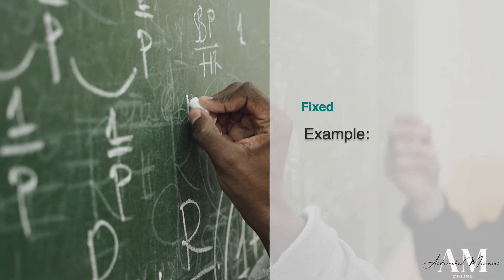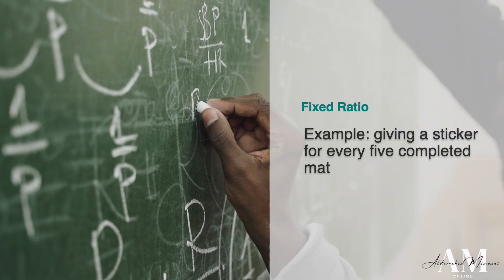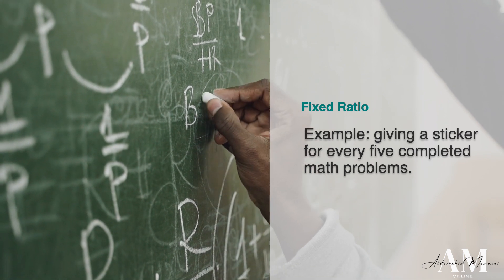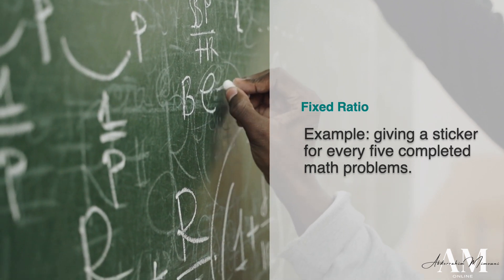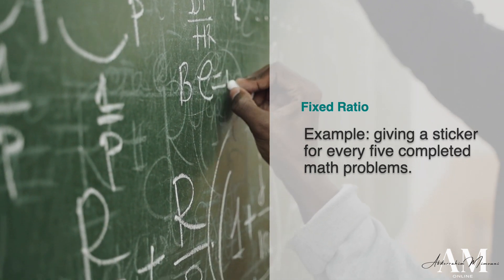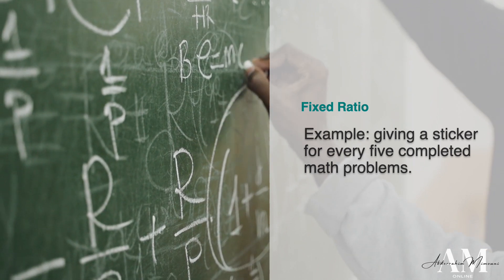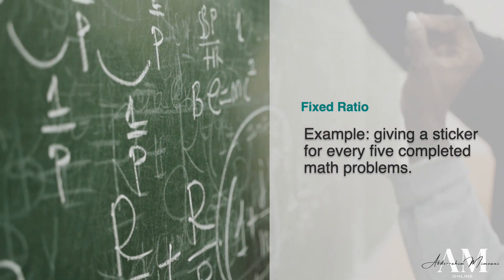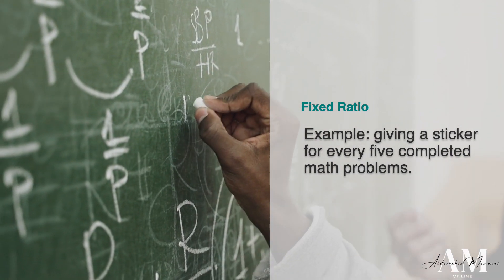Fixed ratio reinforcement is suitable for tasks that can be easily quantified. For instance, giving a sticker for every five completed math problems can motivate students to persist in their work and maintain focus on the task at hand.